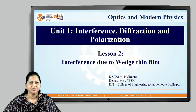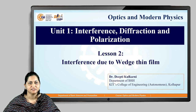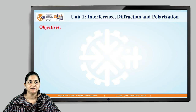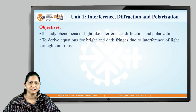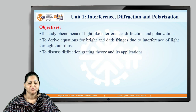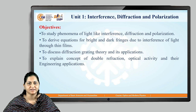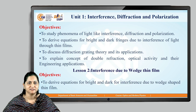We are discussing Unit 1: Interference, Diffraction, and Polarization. In our previous video we covered interference due to uniform thickness in film. In this video we will discuss interference due to wedge-shaped thin film. The objectives are: to discuss interference, diffraction, and polarization and their applications; to derive equations for bright and dark fringes due to interference of light through thin films; to discuss diffraction grating theory; and to explain double refraction and optical activity.